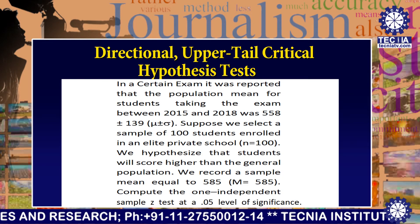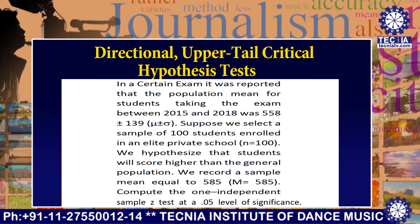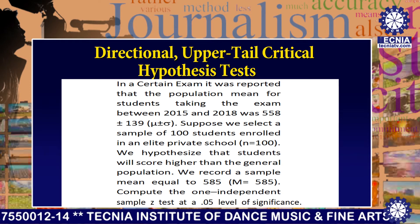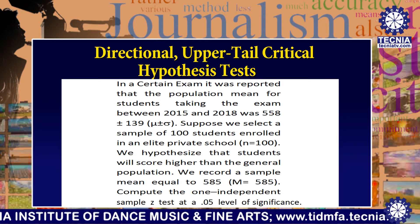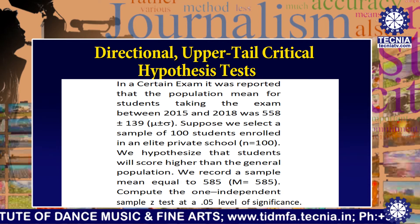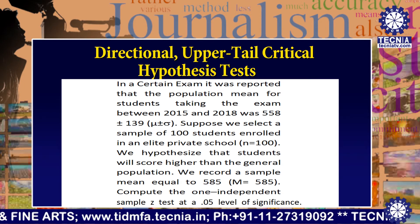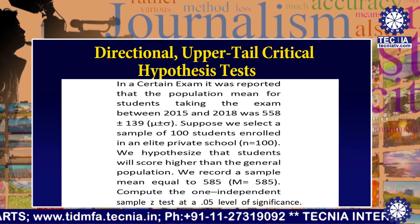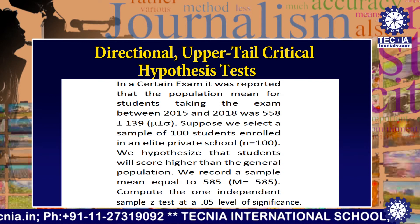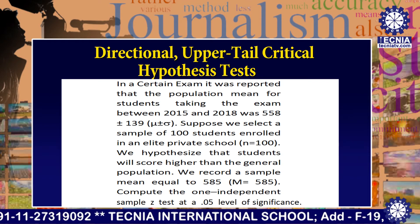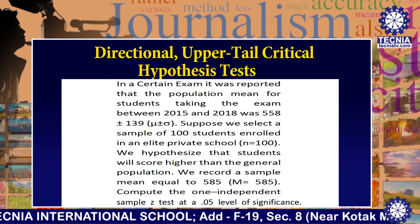In a certain exam it was reported that the population mean for students taking the exam between 2050 and 2018 was 558 plus or minus 139. Suppose we select a sample of 100 students enrolled in an allied private school, n equal to 100. We hypothesize the students will score higher than the general population. We record a sample mean equal to 585. Compute the one independent sample Z test at a 0.05 level of significance.